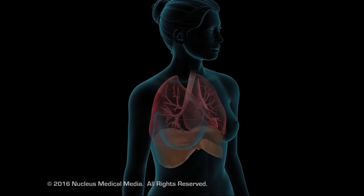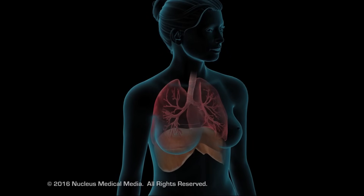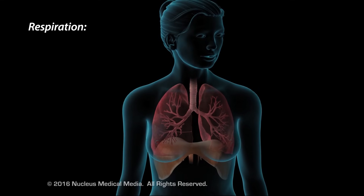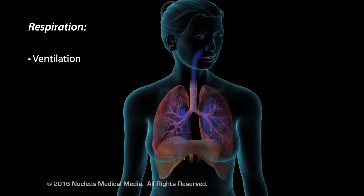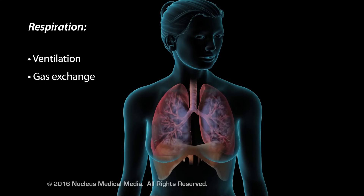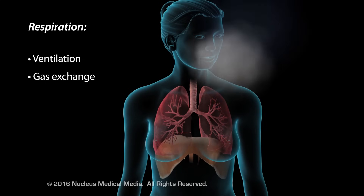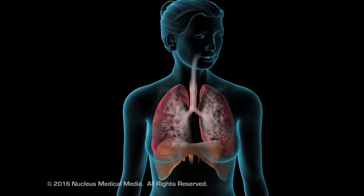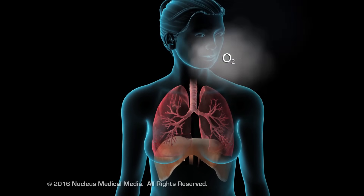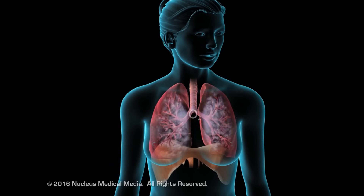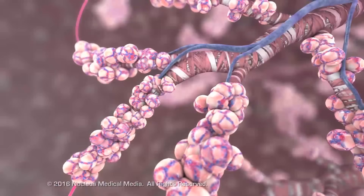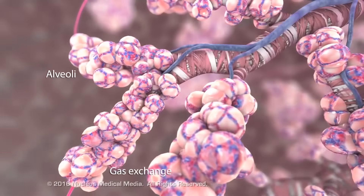The respiratory system regulates oxygen and carbon dioxide levels within the blood. Respiration includes ventilation, gas exchange between the air, blood and tissues within the body, and the use of oxygen for metabolism. Inhalation allows oxygen to enter the body, pulling air into the nose and mouth, lungs, and into the air sacs called alveoli, where gas exchange takes place.